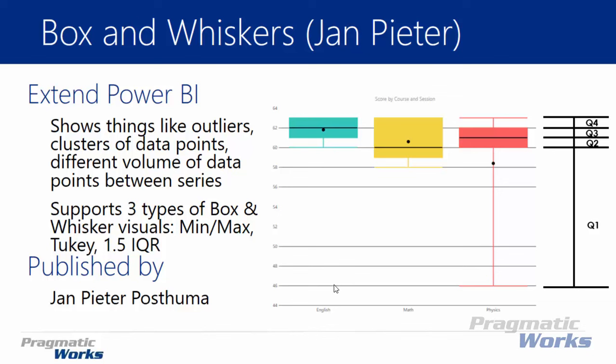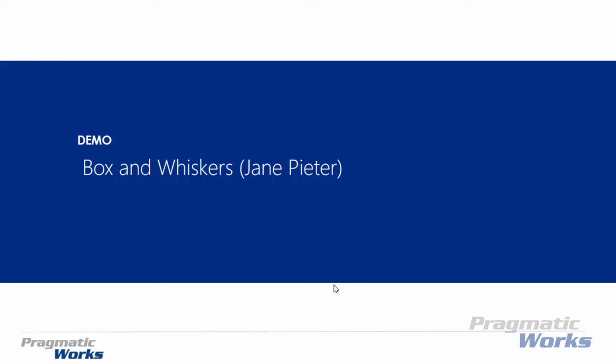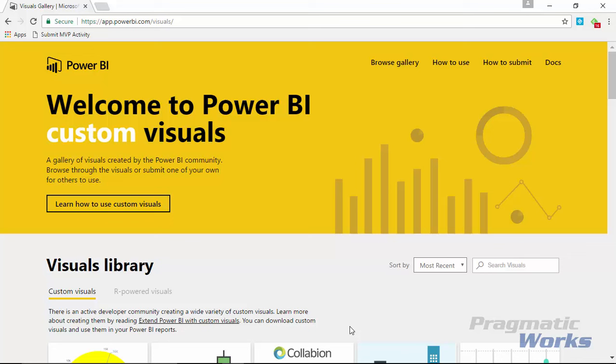This lets you see a distribution of values and several types of statistical variations on your data. This particular chart supports three different types of box and whisker charts — we're going to show you a couple of them. You can also see who developed it if you're curious, and you can follow them to look at other visuals they've developed. Let's go quickly and show you where to download this visual and then how to use it.